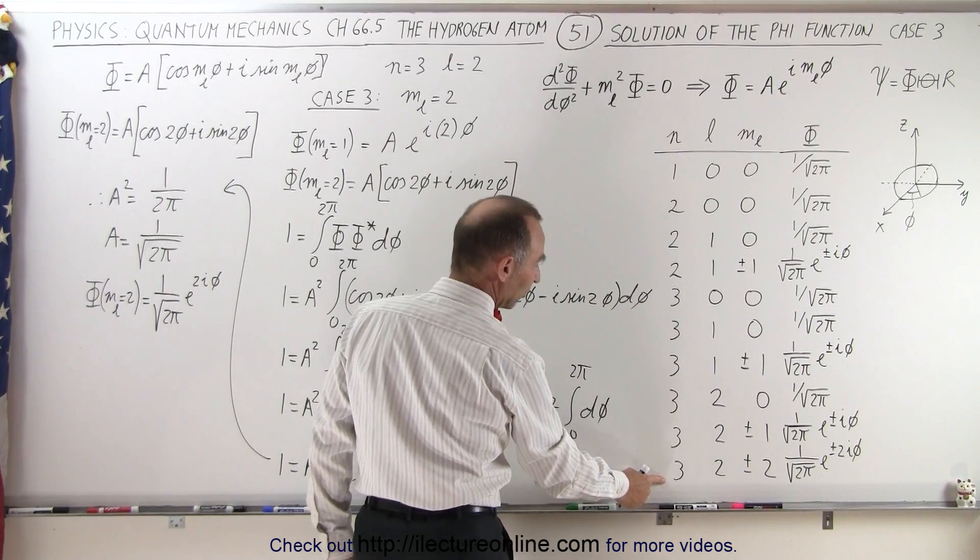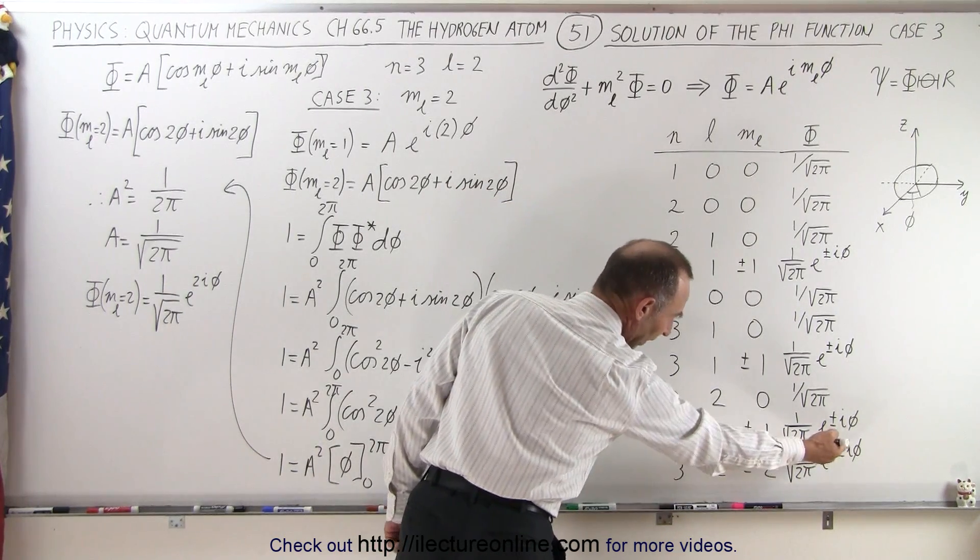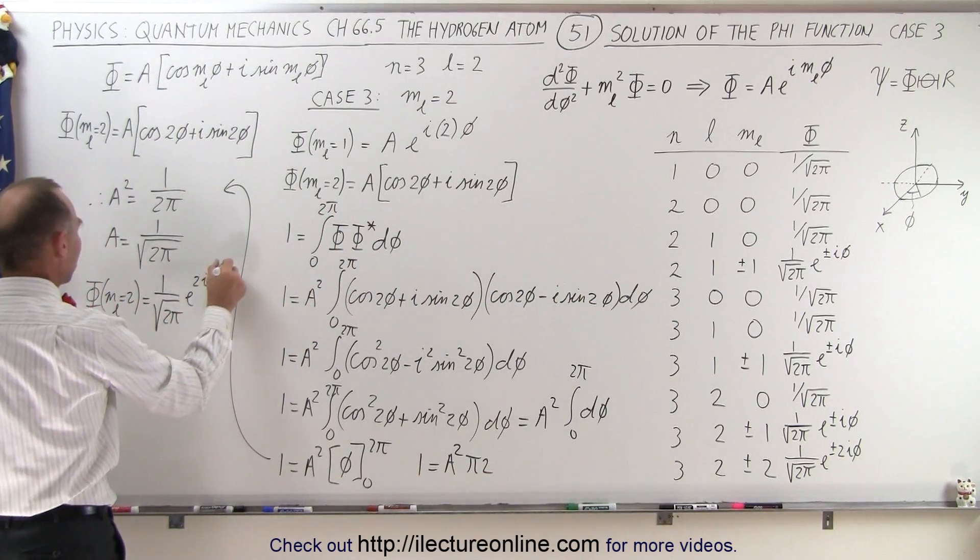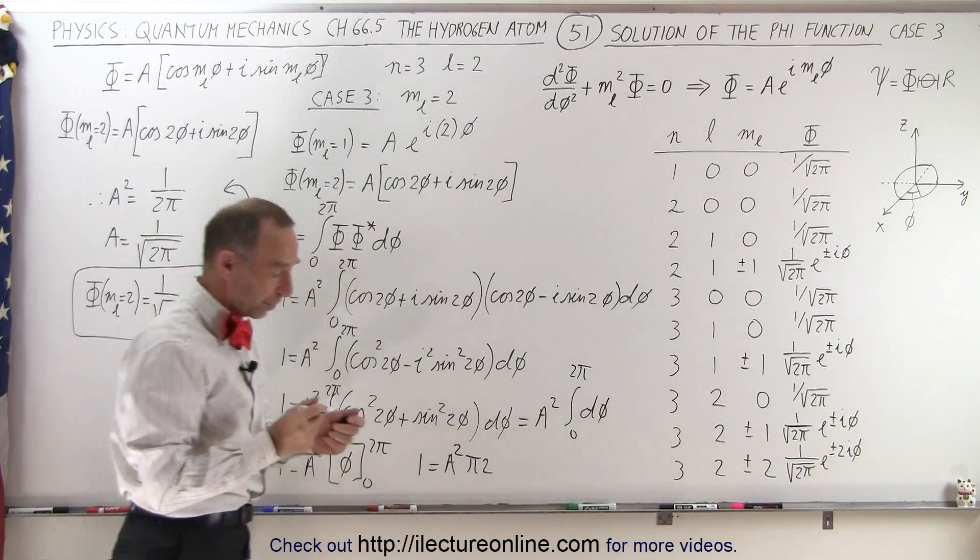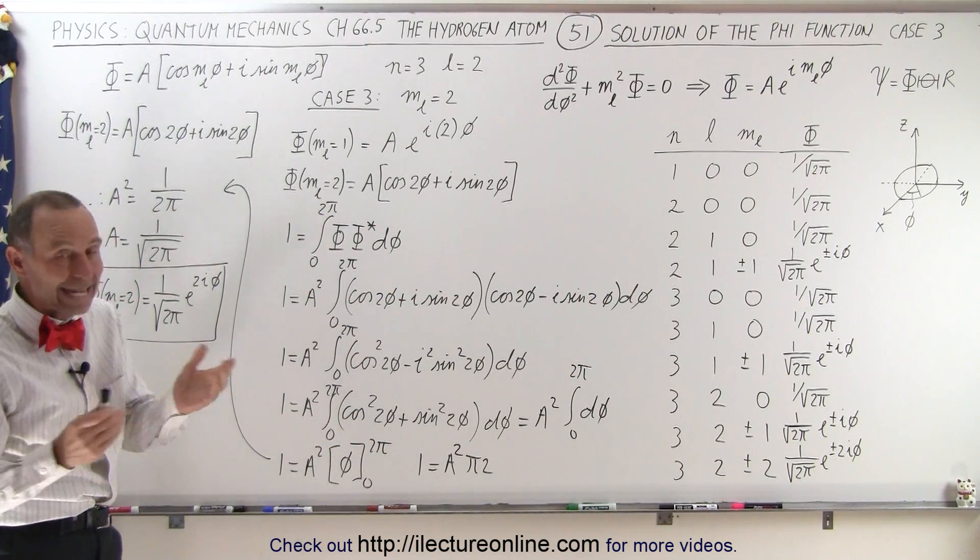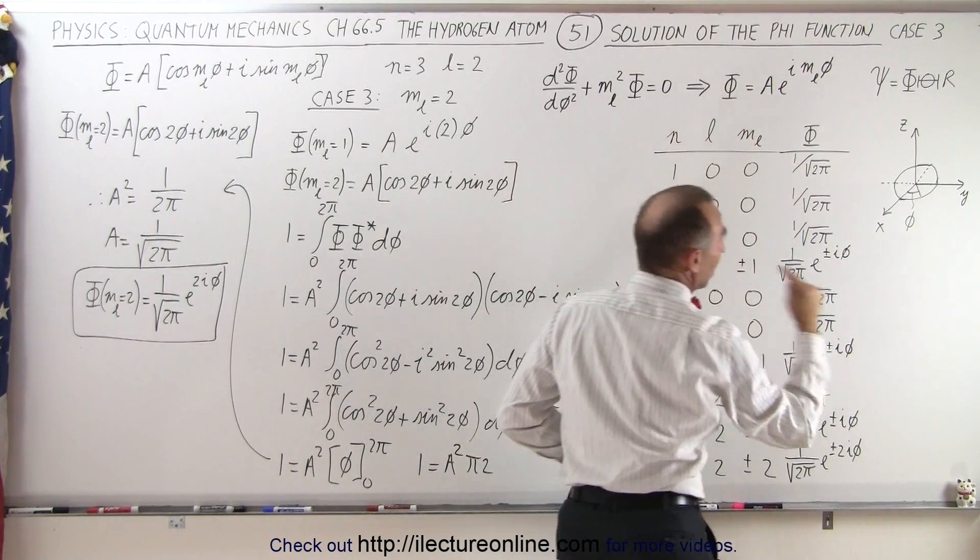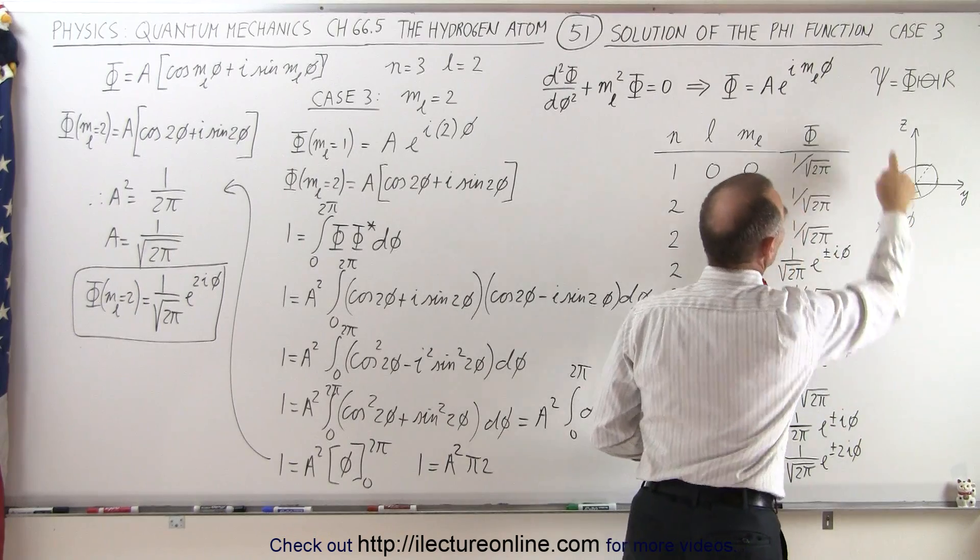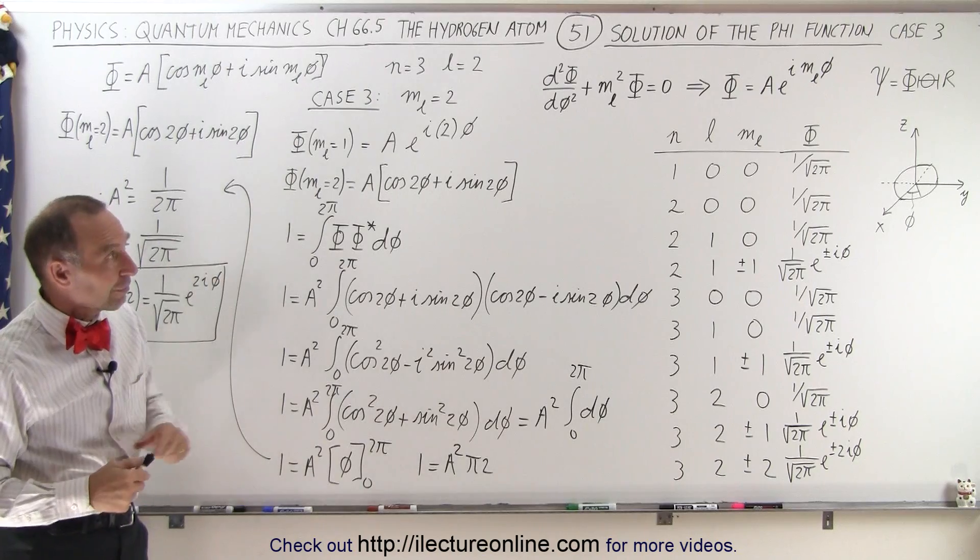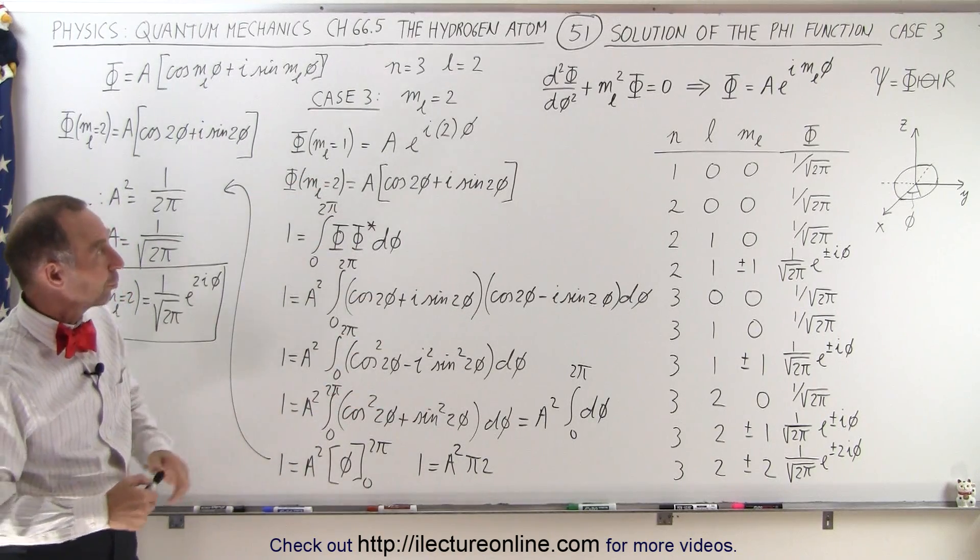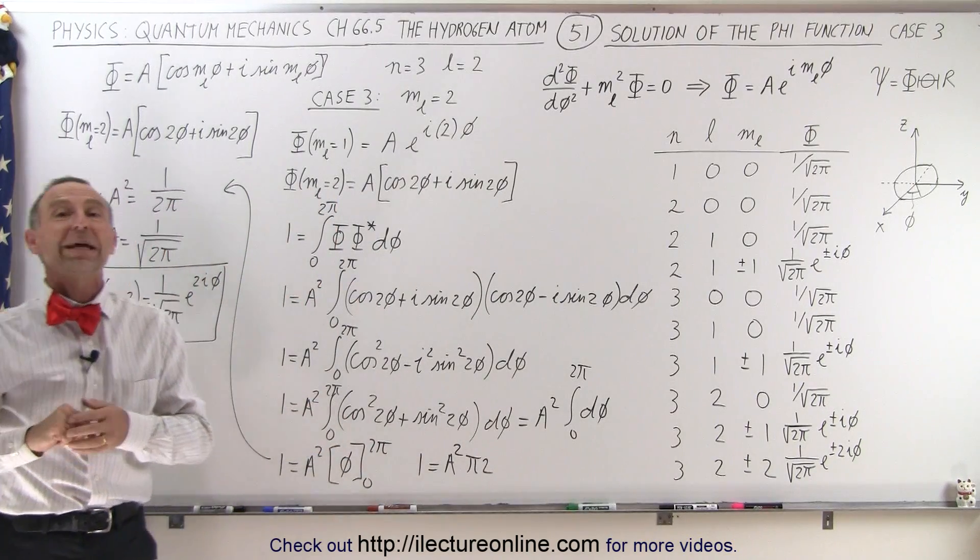We have n equals 3, l equals 2, m sub l equals 2, plus or minus, doesn't matter, it gives you a plus or minus part of the result. But notice that this here is the solution that we have right here in our table. So now, you're able to find any of the solutions for the phi function, the function that represents the azimuthal portion of the solution of the Schrödinger equation. So you've been able to normalize each of the values a for each of the possible solutions to this first differential equation here. So we're one-third the way there.